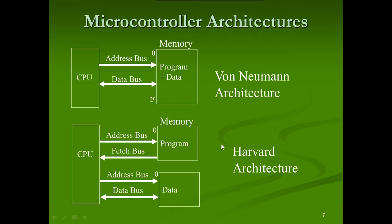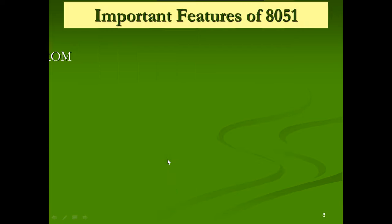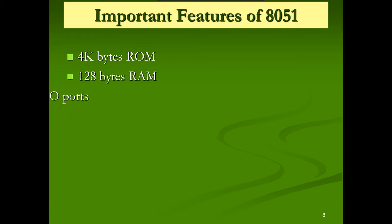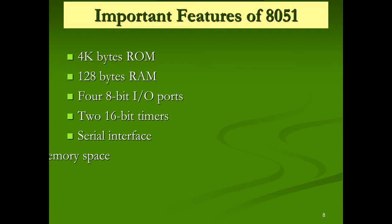In Harvard architecture, program memory and data memory are separated. The CPU connects to each via its own address bus and data bus — a fetch bus for program and a bidirectional data bus for data. The key difference: Von Neumann combines program and data in one memory, while Harvard keeps them separate.